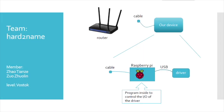Good afternoon everyone. This is Team Hard to Name. We are Zhao Tianze and Zuo Zuo Lin, and our level is Woodstock. Many families are using old routers which only have several cable interfaces. Our purpose is to build a device which can improve an old-generation router into a personal cloud drive. To achieve this, our device should contain a Raspberry Pi and a hard disk. We will do programming inside the Raspberry Pi to let users control the input-output of the drive through the local network.